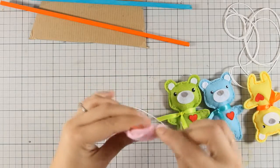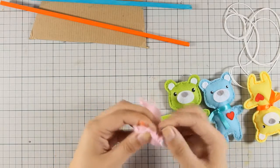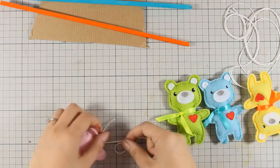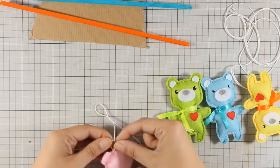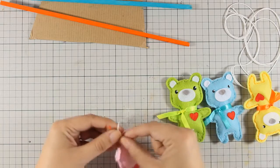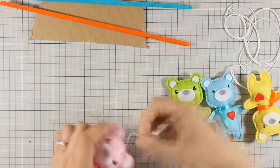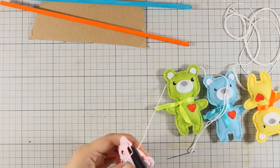I am using my needle and I am going to thread some string at the top of the bears and I'm going to tie a knot there so I can have a string to hang them from the wooden sticks. I'm going to repeat the same process for all four bears and then I'm ready to assemble my mobile.